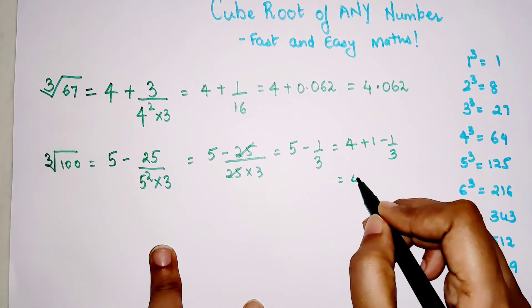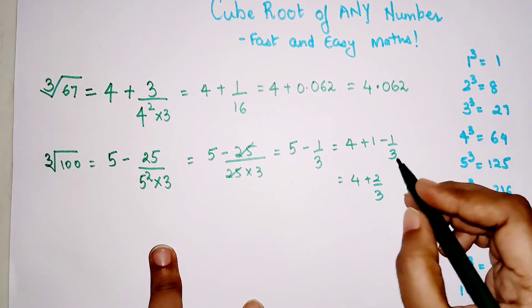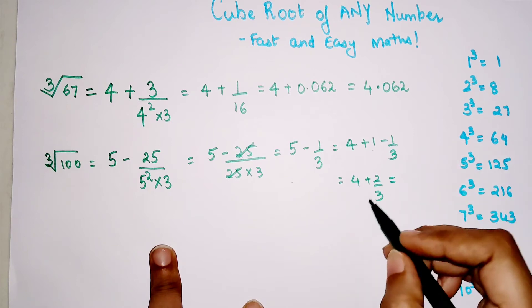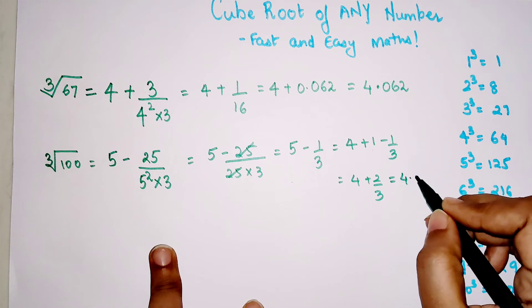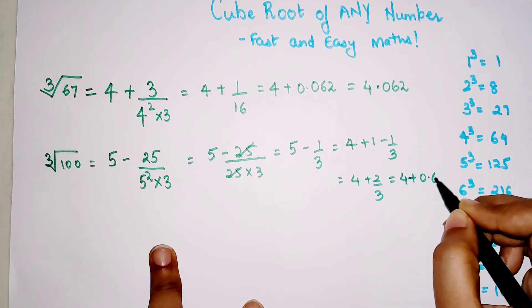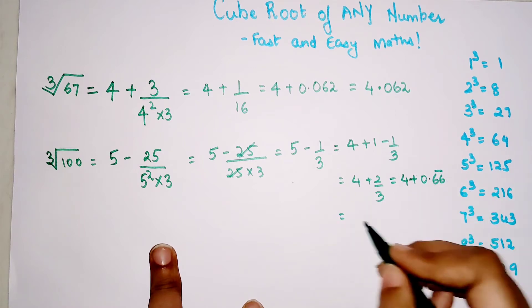So 1 minus 1 by 3 becomes 4 plus 2 by 3. The answer now becomes 2 by 3, which is 4 plus 0.66.